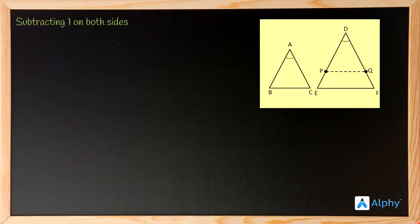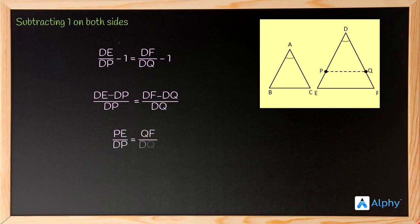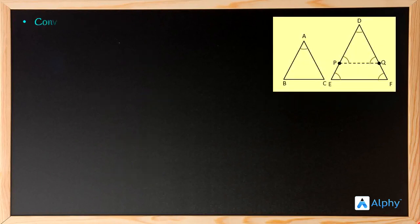Subtracting one from both sides: DE/DP − 1 equals DF/DQ − 1, which gives (DE − DP)/DP equals (DF − DQ)/DQ. In triangle DEF, DE minus DP equals PE and DF minus DQ equals QF, so this becomes PE/DP equals QF/DQ, and hence DP/PE equals DQ/QF.